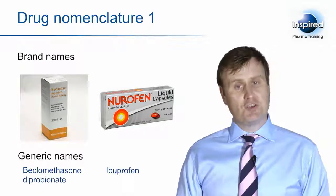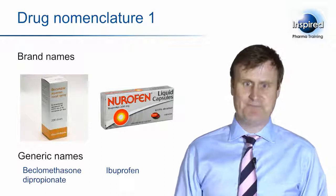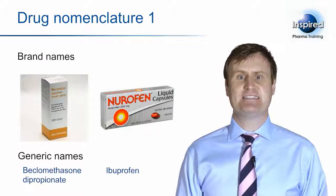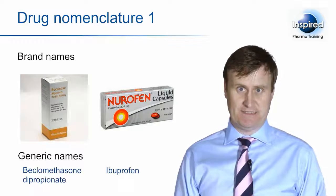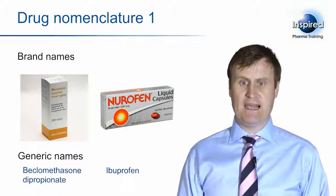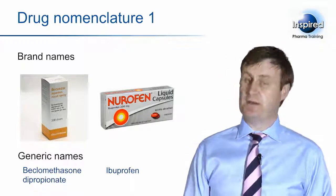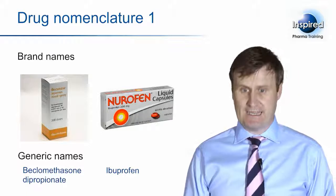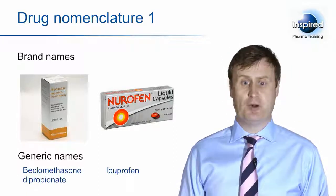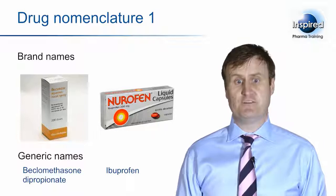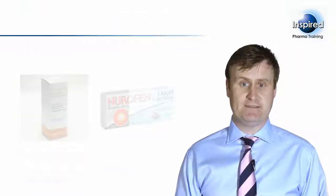If a doctor prescribes a product by its brand name, then the pharmacist needs to give the patient the brand specified. However, if the doctor prescribes a product by its generic name, then the pharmacist can choose from often a range of usually cheaper generic versions of the medicine.